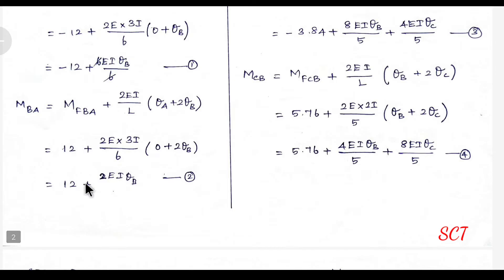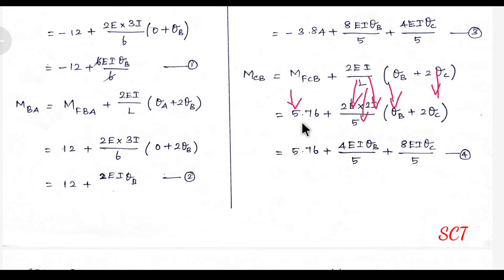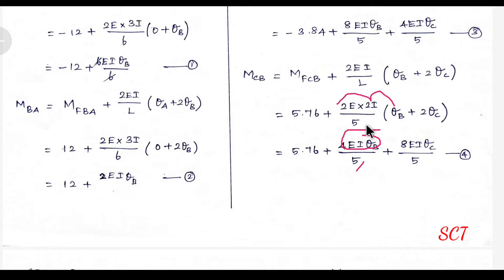Next, M_CB. Substituting M_CB plus 2EI. C is the near end, with θC double, and θB single. Substituting M_CB value equals plus 5.76. With 2i over 5: 2 into 2 is 4, so 4EI·θB divided by 5, and 2 into 2 is 4, so multiply EI·θC by 5 terms. This gives equation number 4.